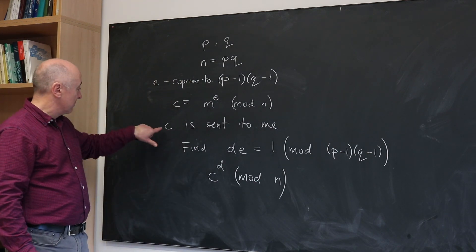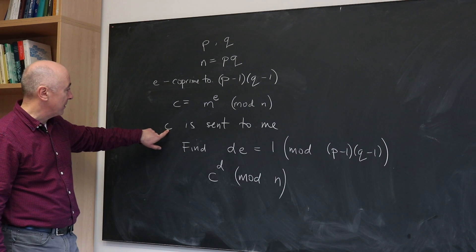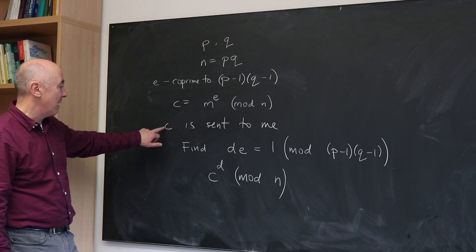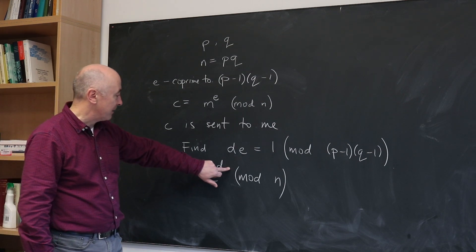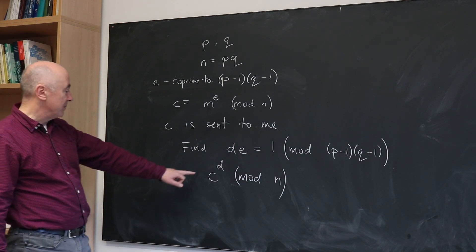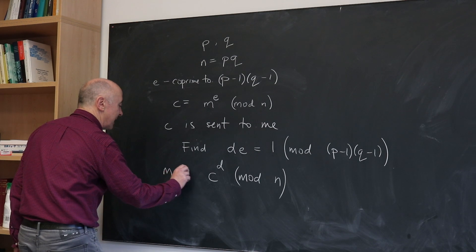I have somebody sent me the number C, that's the encoded number. I raise my C to the power D which I know because I've solved this equation beforehand, and I compute C to the power D modulo N, and by a miracle the answer is always M.